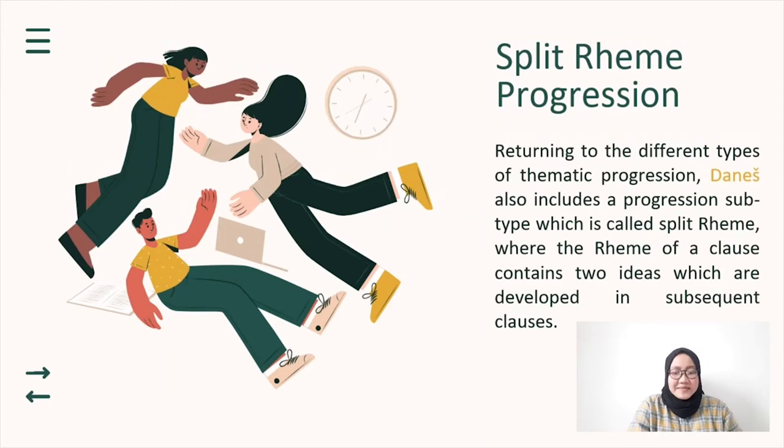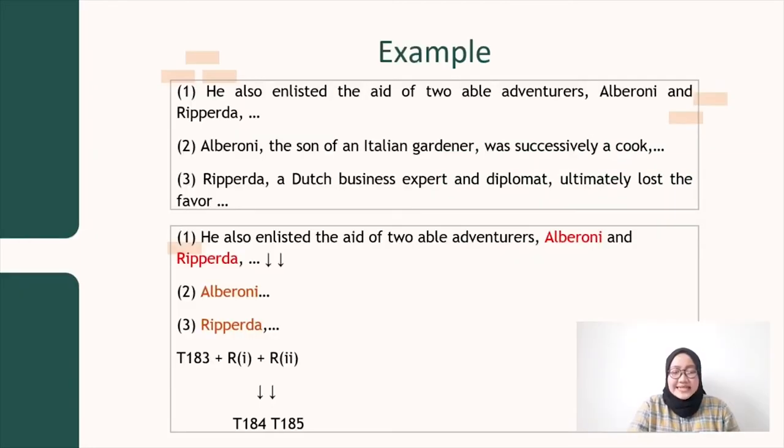Hello, my name is Amelia. So here I want to explain about split rheme progression. Returning to the different types of thematic progression, then also includes a progression subtype which is called split rheme, where the rheme of a clause contains of two ideas which are developed in subsequent clauses. As you can see in the example, there are three clauses here. So I numbered them as one, two, and three.